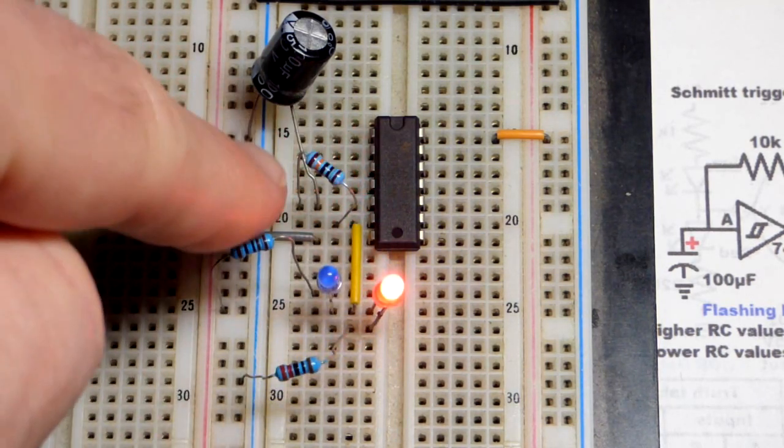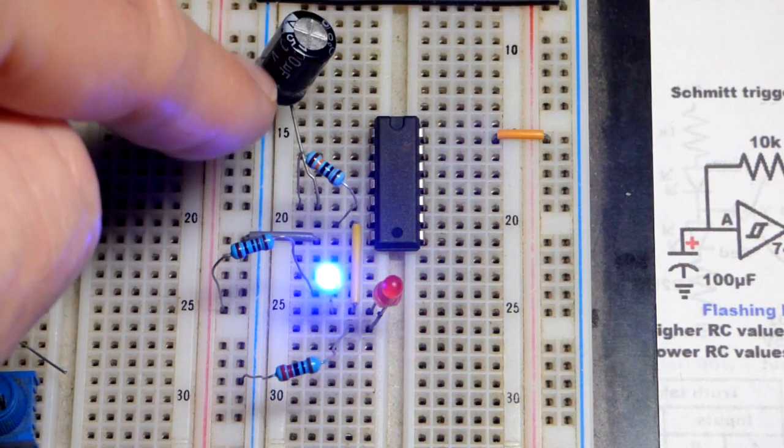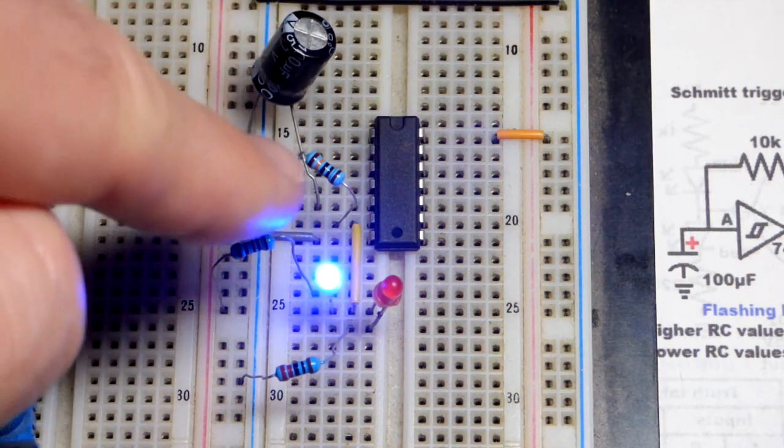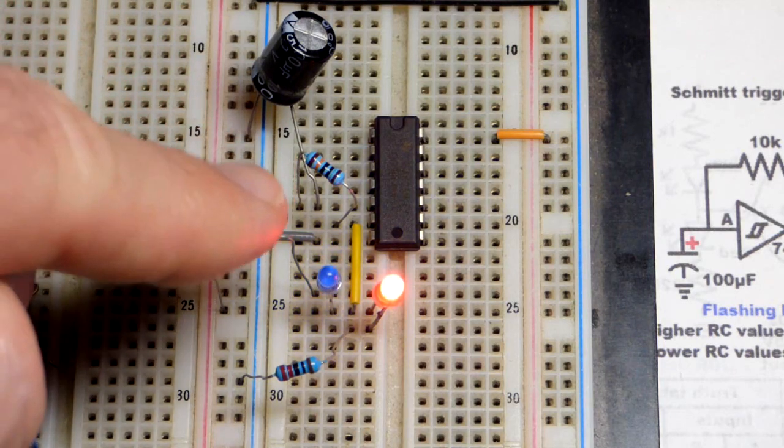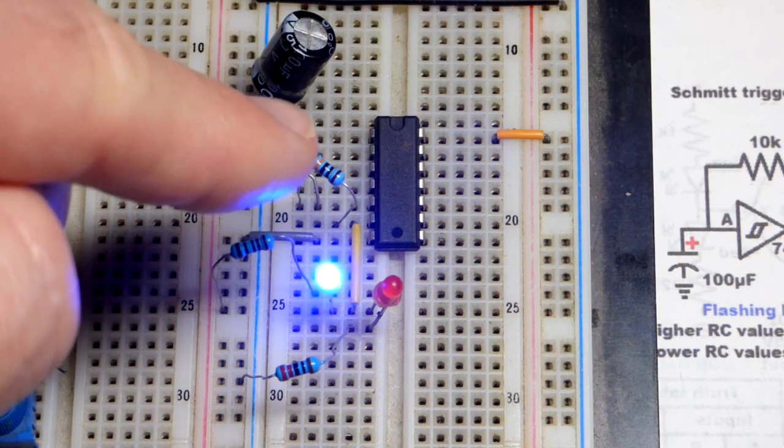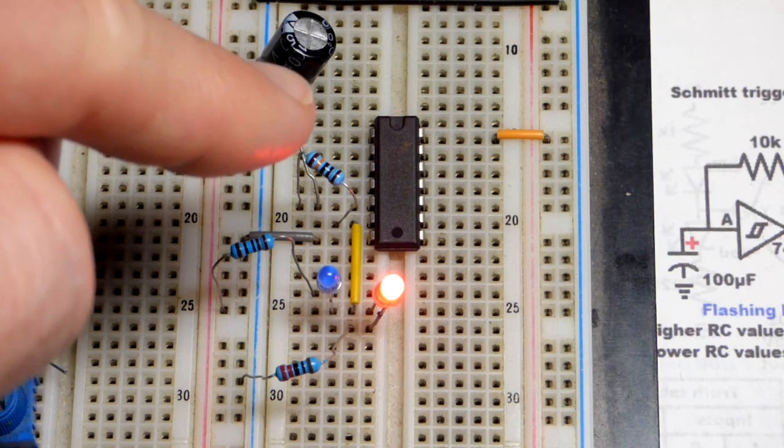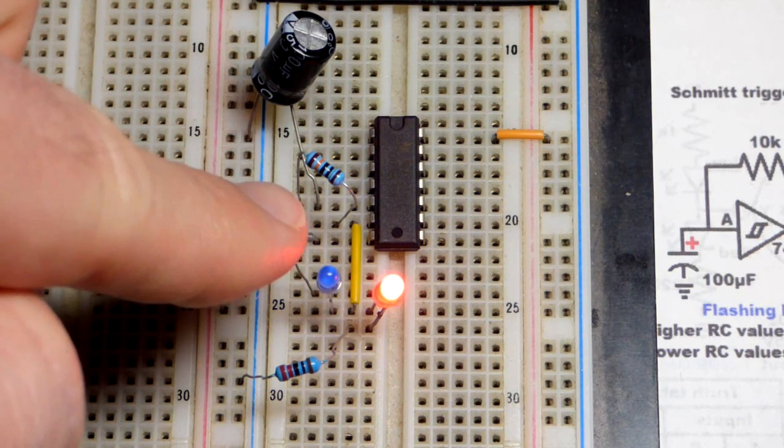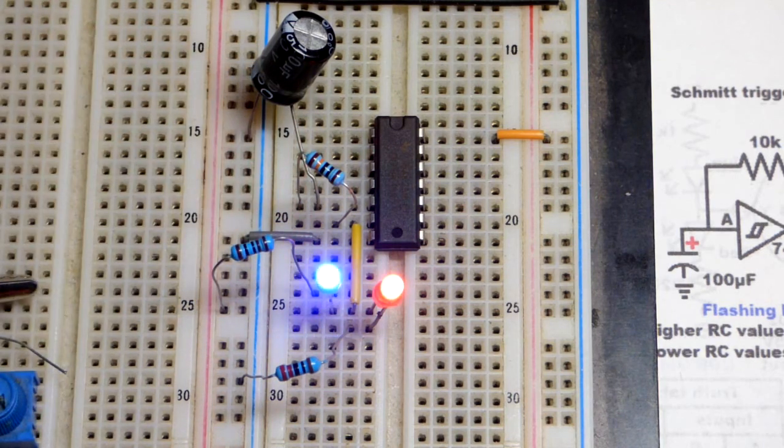When the output went low, that discharges the capacitor, lowering its voltage. There's a hysteresis, a middle ground region where it can be in either state. So it goes up to where it's charged high enough to set the output low, then it discharges where it's down low enough to set the output high and keeps bouncing back and forth.